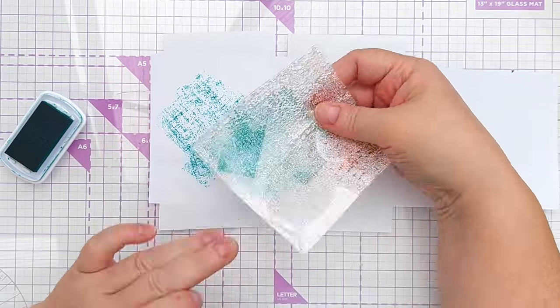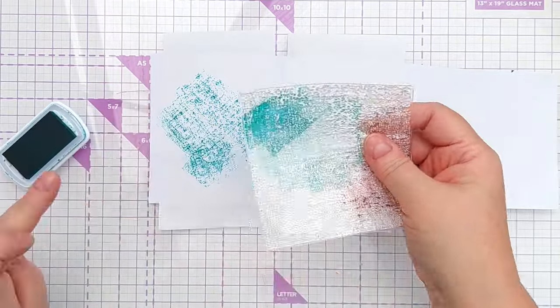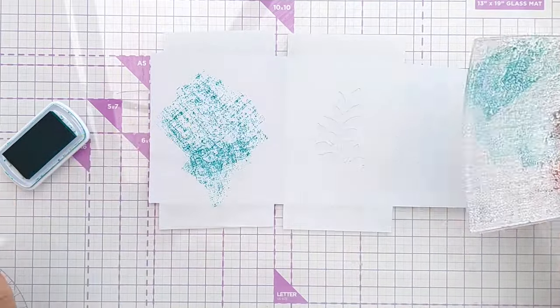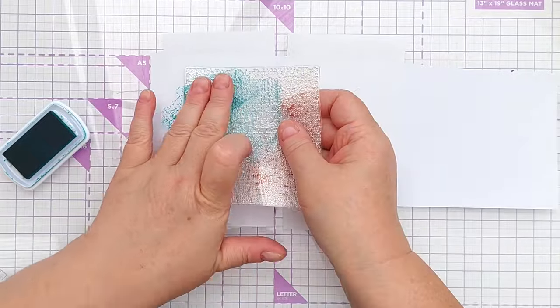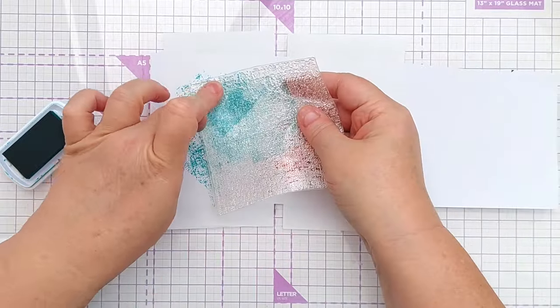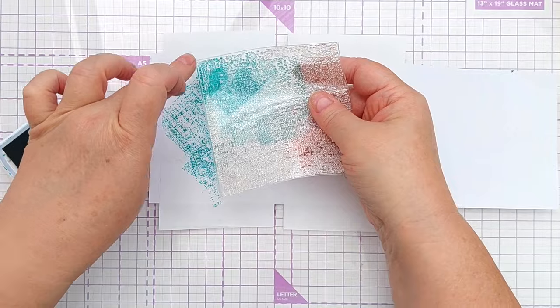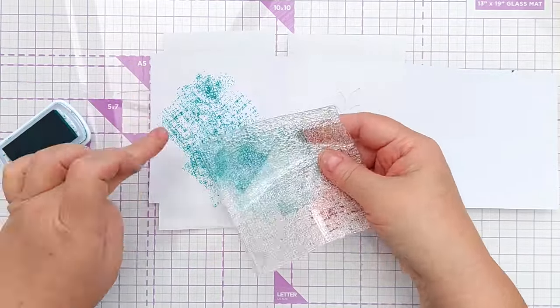So I inked up the stamp and then held it in my hand and used my fingers just to press it down over the stenciled area, layering it up in different parts, bringing in some variation that way but making sure to get all the edges of that stencil inked up.